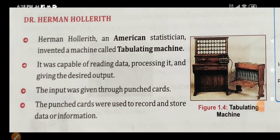Herman Hollerith, an American statistician, invented a machine called the tabulating machine. As you can see in the picture, it was capable of reading data, processing it, and giving the desired output — just like computers today. The input was given through punched cards, which were also used to record and store data or information.